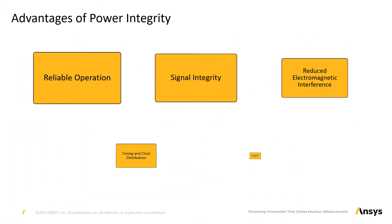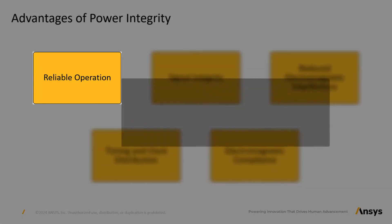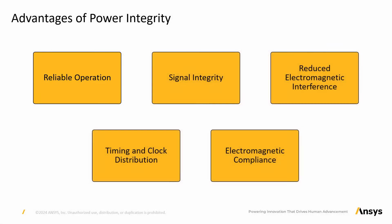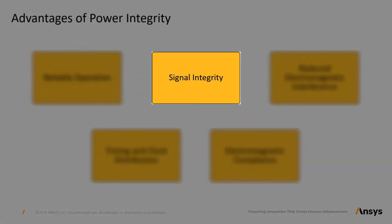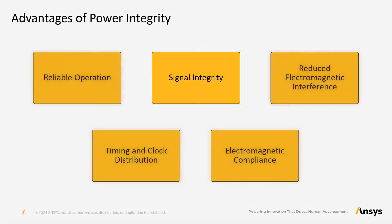Here are some advantages of designing a circuit that meets power integrity requirements. Reliable operation: power integrity ensures a stable and consistent power supply. Fluctuations or noise in power can lead to malfunctions in the power supply chain or even complete circuit failures. Signal integrity: power integrity directly affects signal integrity. Supply rail noise and ground bounces can couple into nearby signal lanes, degrading signal quality and causing data errors.